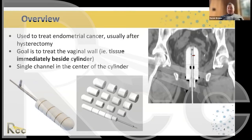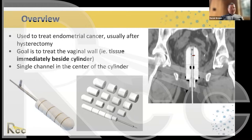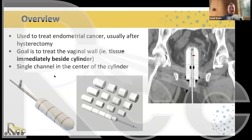The goal is to treat the upper part of the vaginal wall. In terms of channels, we have just one single option — a metal tube running through the center of the cylinder. We run the source through the cylinder and stop at various locations; the length of time we stop at each position determines what the dose distribution looks like for that specific patient.